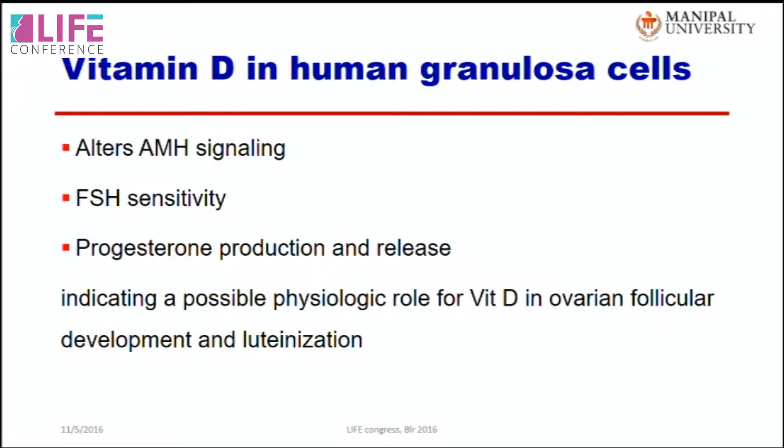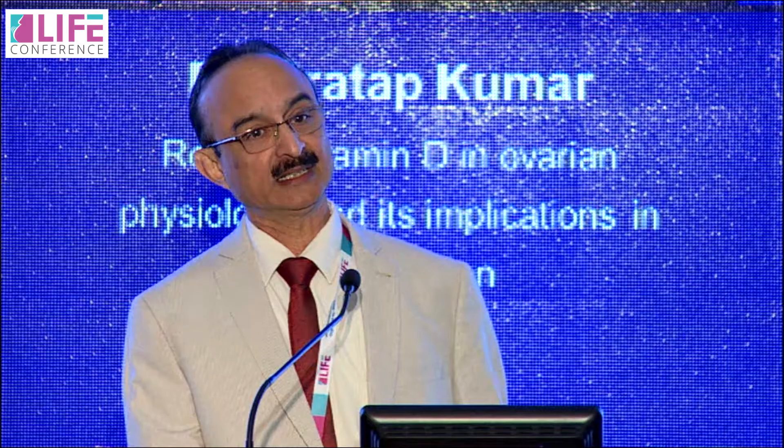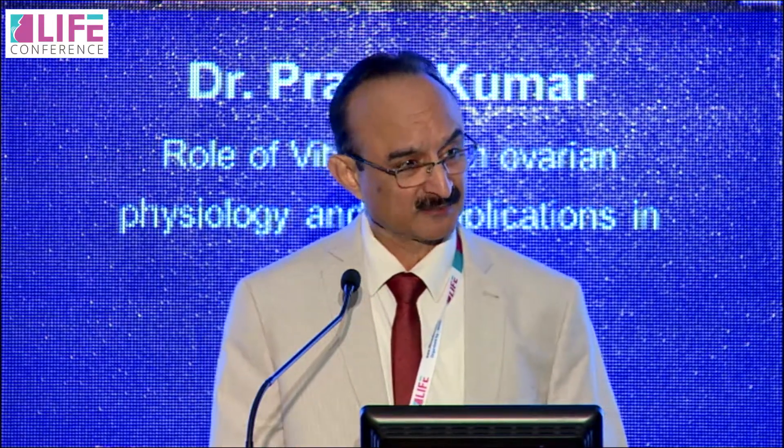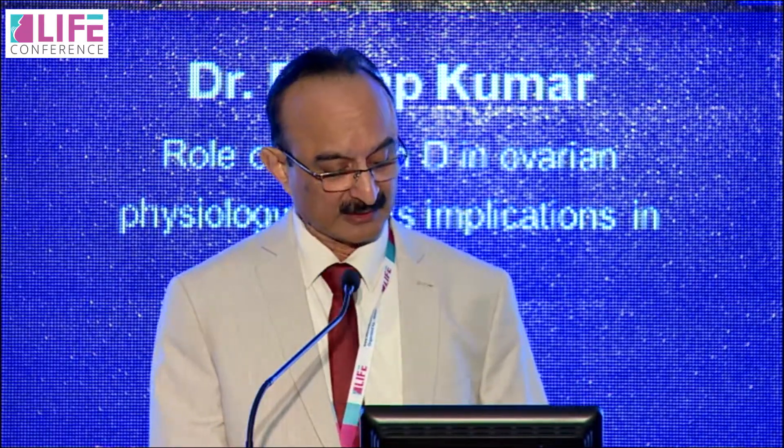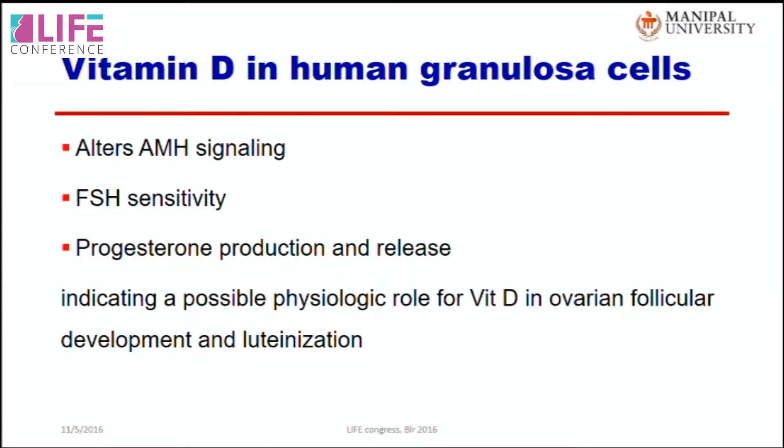Vitamin D alters anti-Müllerian hormone (AMH), which is very interesting. It also alters FSH sensitivity and produces extra progesterone from the corpus luteum, indicating a possible physiological role of vitamin D in ovarian follicular development and luteinization.